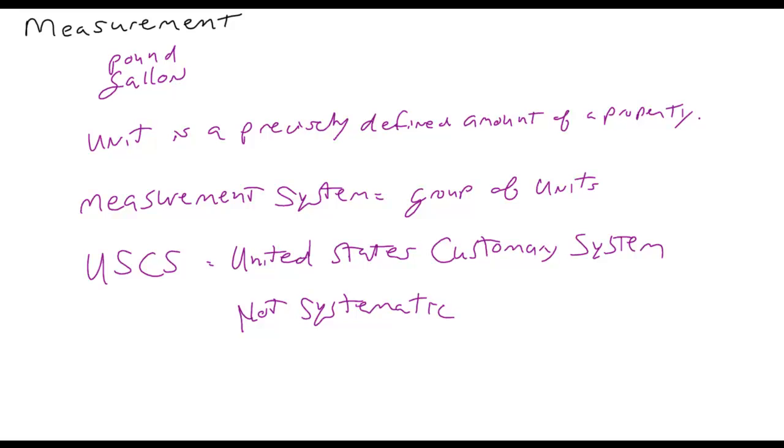For instance, in measurements we have tablespoons and teaspoons and ounces, and there's no consistent way. We have two pints in a quart, four quarts in a gallon, even 126 quarts in a barrel. So a barrel is a unit in the United States customary system. And we're used to working with them, but in the laboratory, this lack of systematic relationship is problematic. So in the lab, we're going to use the metric.